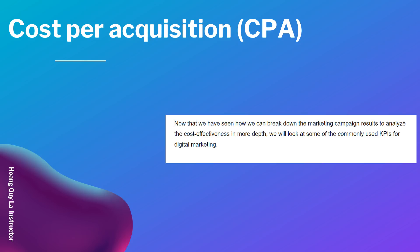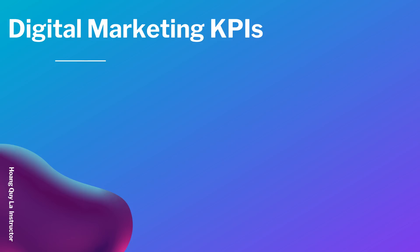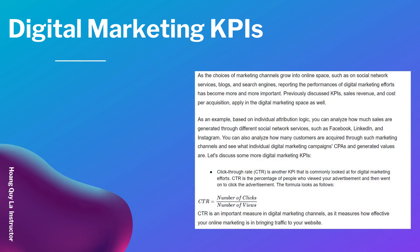Now that we have seen how we can break down the marketing campaign results to analyze cost effectiveness in more depth, we will look at some of the commonly used KPIs for digital marketing. As the choices of marketing channels grow into the online space — such as social network services, blogs, and search engines — reporting the performance of digital marketing efforts has become more and more important. The previously discussed KPIs, sales revenue and cost per acquisition, apply in the digital marketing space as well. For example, you can analyze how much sales are generated through different social networks such as Facebook, LinkedIn, and Instagram, and analyze how many customers are acquired through each digital marketing channel.